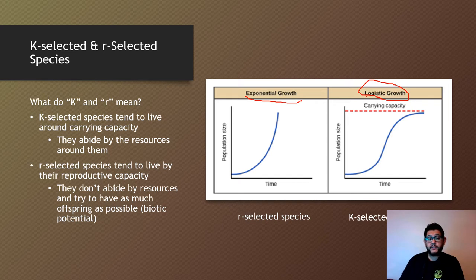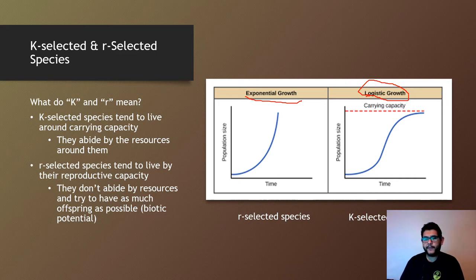Whereas R-selected species live by their reproductive capacity. So instead of living by the carrying capacity of the environment, R-selected species do as best they can having as many babies as they can. That's their big strategy, and that's what they call biotic potential.